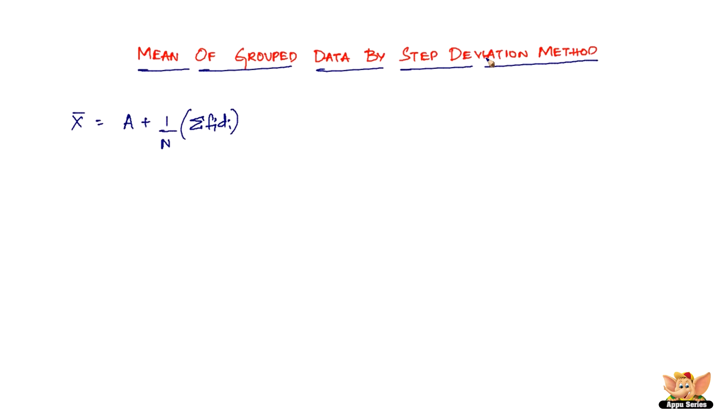As far as the step deviation method is concerned, let me tell you this is the shortcut method. When we come to the step deviation method, what is different is that we've got x̄ = A + H × (1/N) × Σ(fi × ui), where H is a new term, a divisor that divides the deviation, and then 1 divided by N is still there.